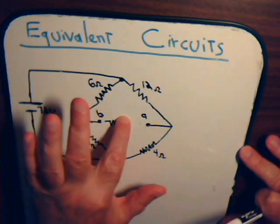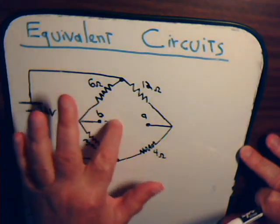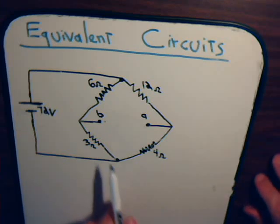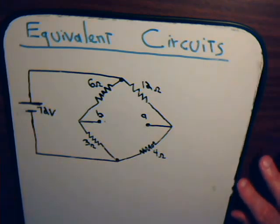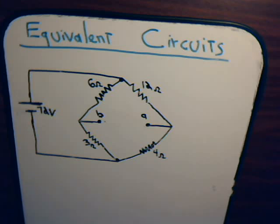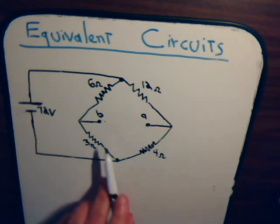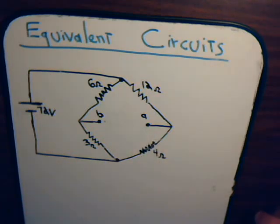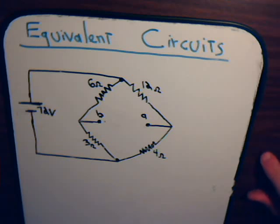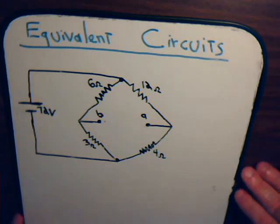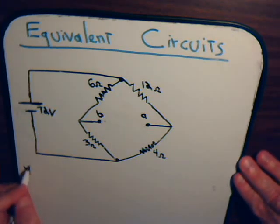The first step is to determine the Thevenin equivalent. We need to determine the voltage drop across these terminals, or determine the open circuit voltage. If we know the potential at point B and also at point A, we just take the difference to determine that. For this circuit that is pretty easy to do because we have a 6 ohm and a 3 ohm resistor in series, so we can determine the voltage drop across the 6 ohm one pretty easily using the voltage divider principle — which we covered in our very first video.